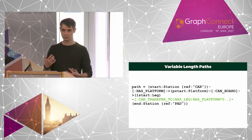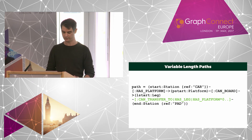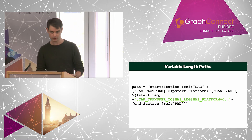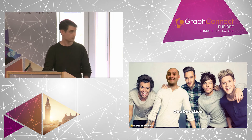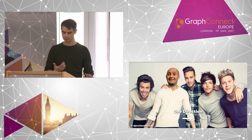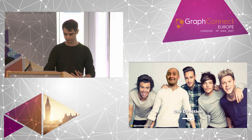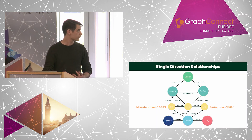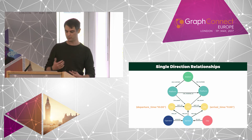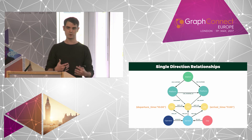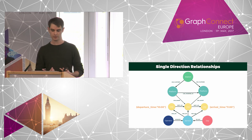At this point query times were still quite large — around 30 seconds to get a result, which wasn't performing well enough. So I needed to make the model more efficient. As I returned to the whiteboard, I had a bit of an epiphany: by directing all relationships in a single direction, the queries would be a lot more efficient. By swapping out the start-at and end-at relationships with new can-board and can-alight relationships, I could traverse in a single direction and ignore a whole subset of relationships inside the queries.